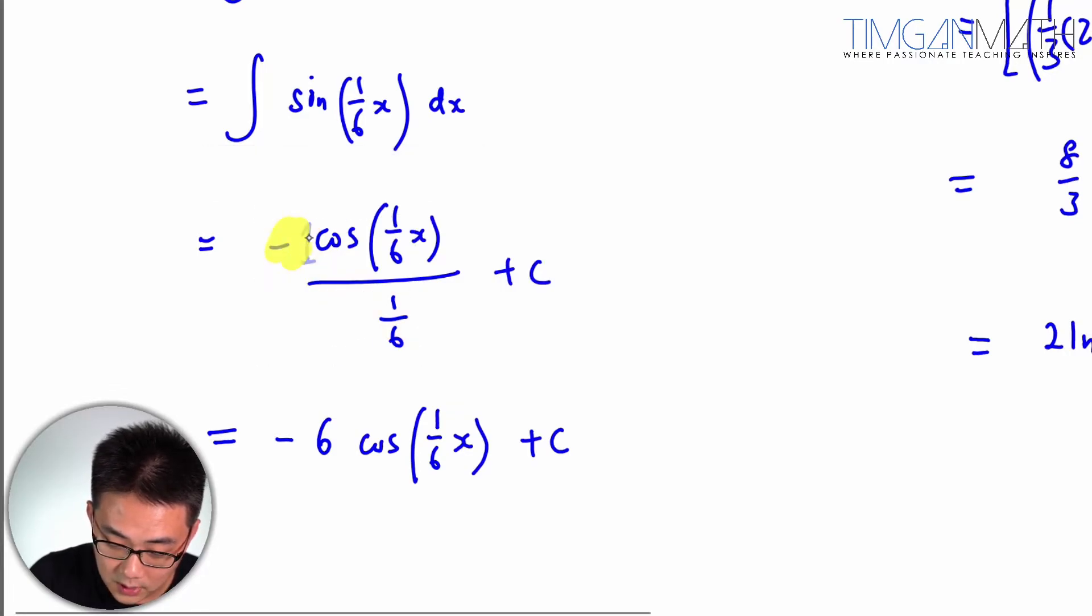If you were to use this part here, this region here will just be negative 1 over 1/6. Negative 6. Okay. This is how you manipulate this part here.